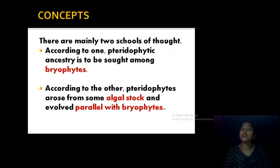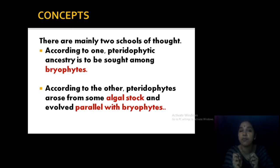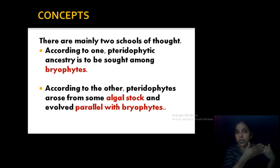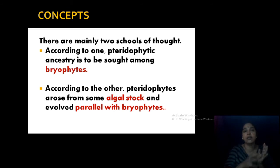There are mainly two schools of thought — two broad concepts regarding the origin of pteridophytes. The first group of scientists says that pteridophytes evolved from bryophytes — that is the bryophyte origin. Another group strongly supports that they originated from algal stocks and evolved parallel with bryophytes. So bryophytes from algae, as well as pteridophytes from algae — that is the second thought.